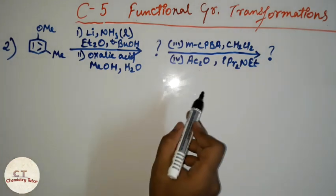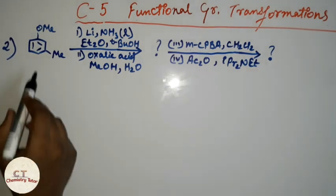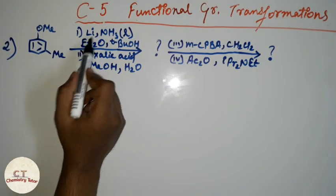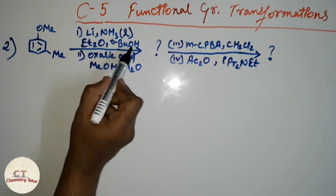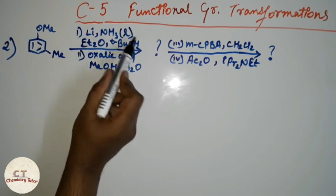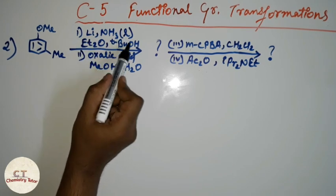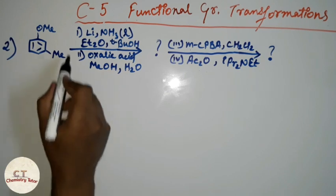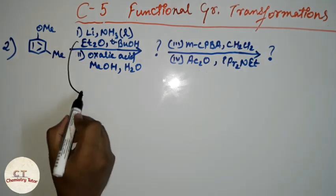Let us move to the next question. In this question, first of all, lithium, ammonia, ether, and butanol are given. Whenever you see lithium, ammonia, and an alcohol together, this is a Birch reduction.